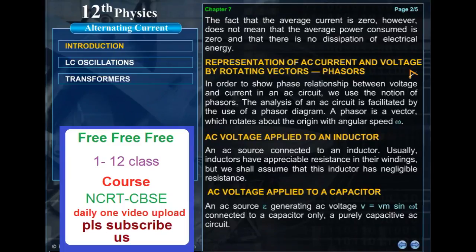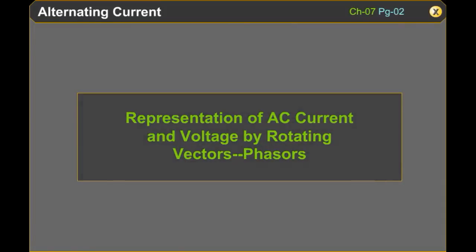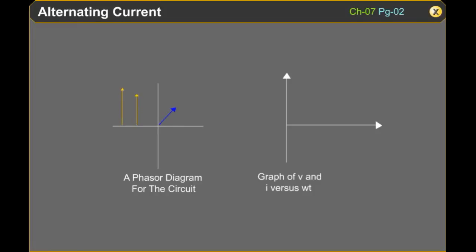Representation of AC current and voltage by rotating vectors phasors. In the animation shows that the voltage and the current phasors and their relationship at time T1 for the case of an AC source connected to a resistor. The projection of voltage and current phasors on vertical axis, i.e. Vm sin omega T and Im sin omega T respectively, represent the value of voltage and current at that instant.